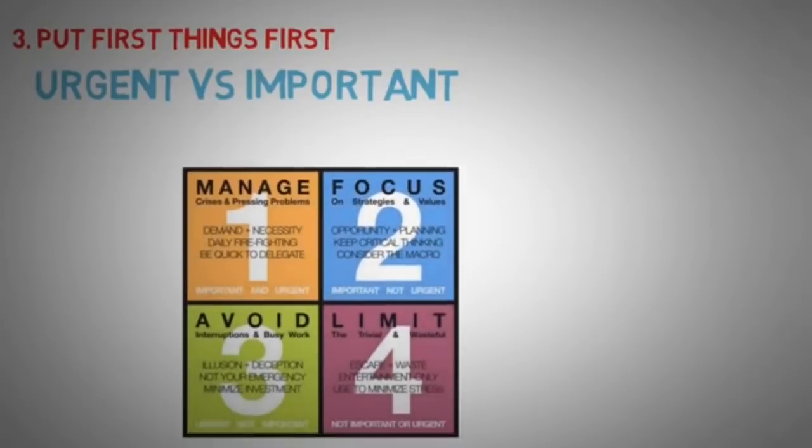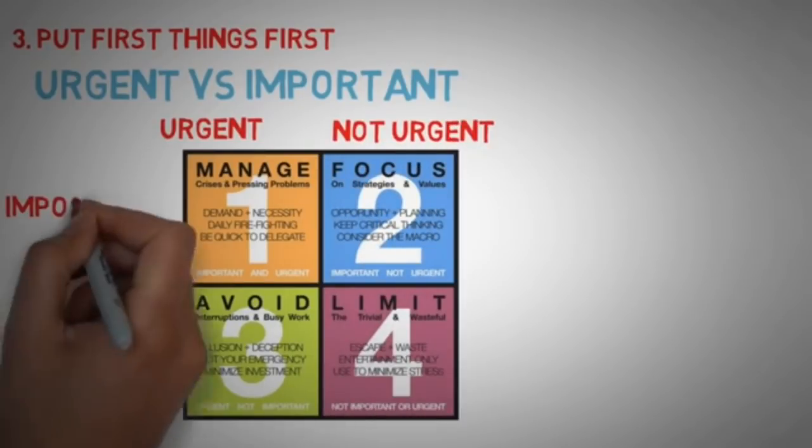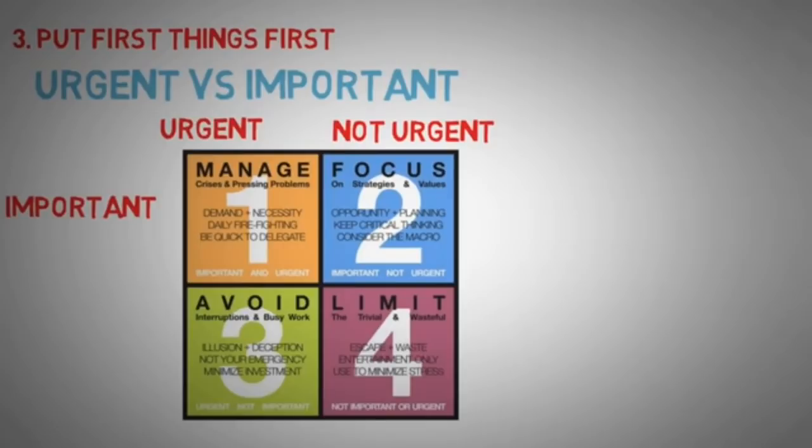So Stephen Covey came up with this thing called the urgent and important matrix. Basically, everything you can do falls into one of four categories. Here's a super easy graphic that can make it easier to understand. Anything urgent is something that needs to be done as soon as possible, and anything important is something that makes us effective.